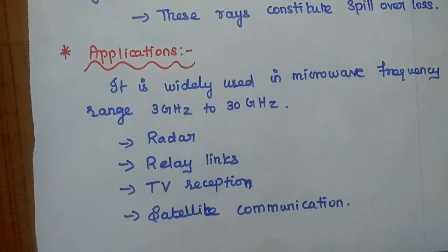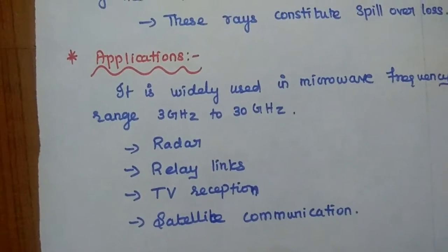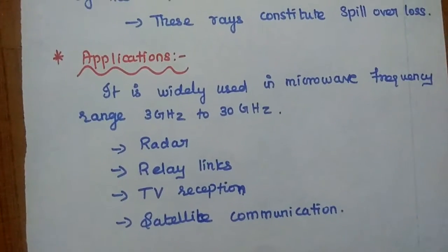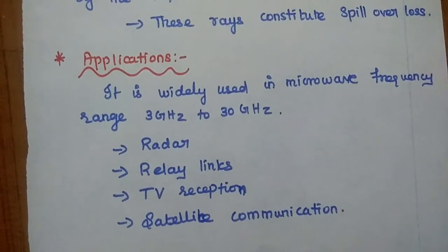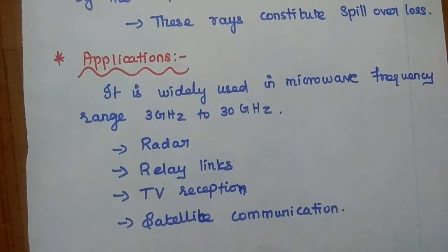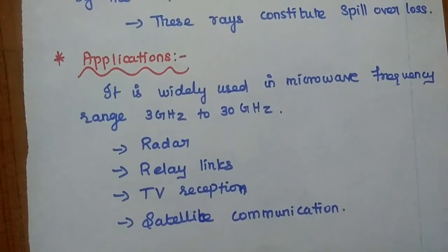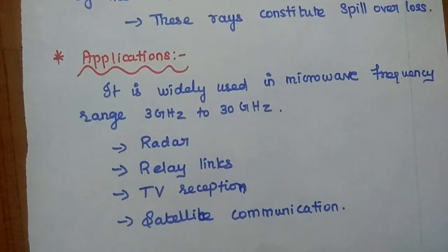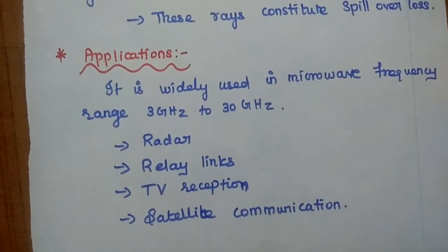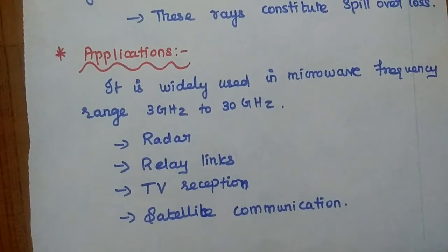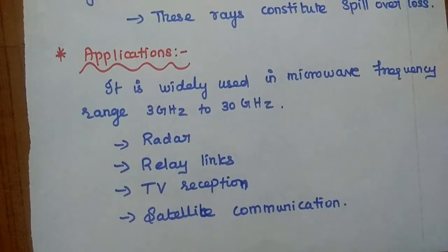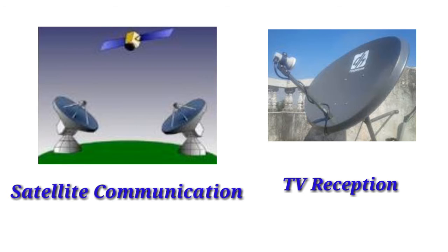Applications of the paraboloidal reflector: this parabolic reflector is widely used in the microwave frequency range of 3 GHz to 30 GHz in areas of radar, relay links, and TV reception. These are the real-time applications of parabolic reflector antenna.